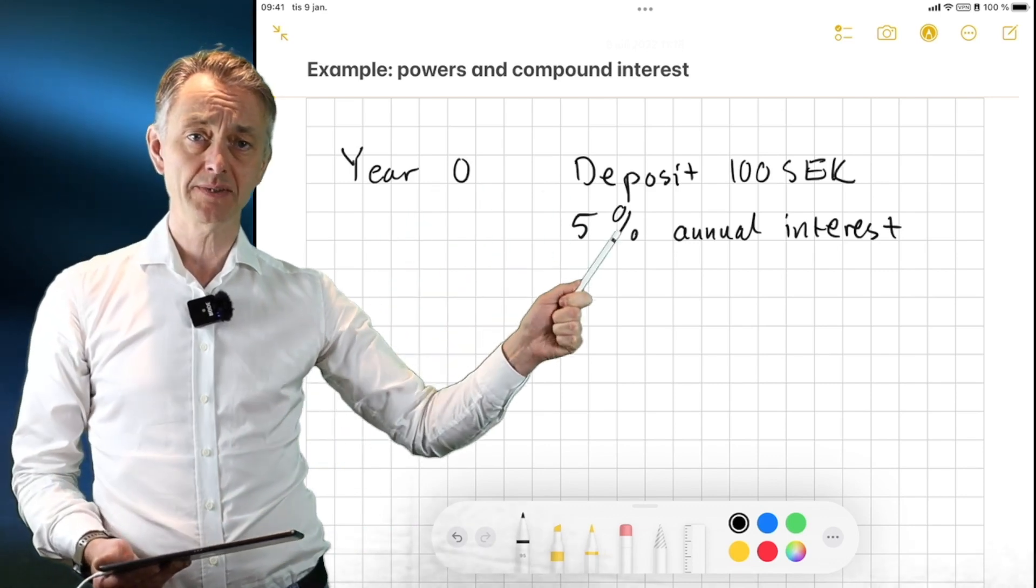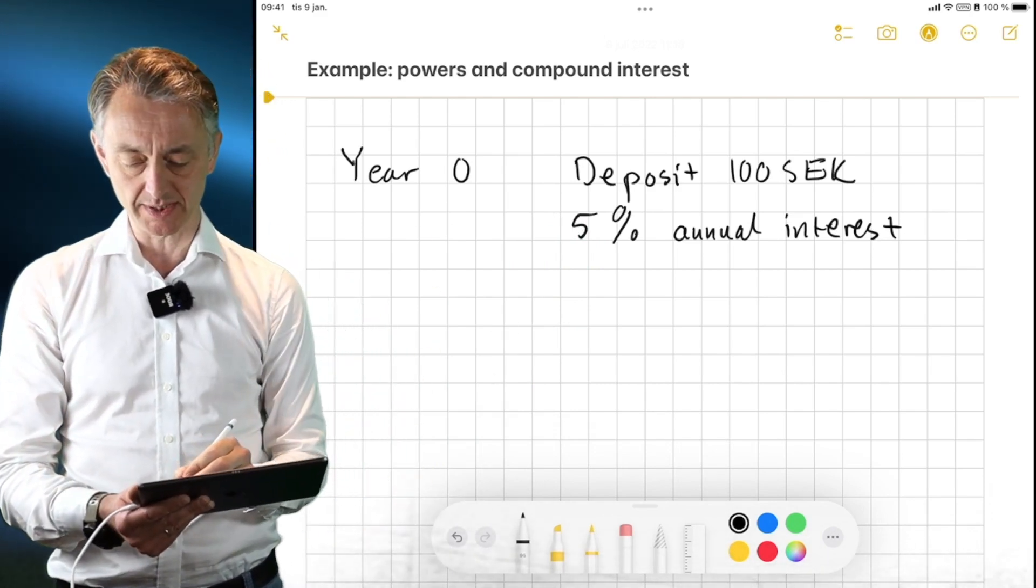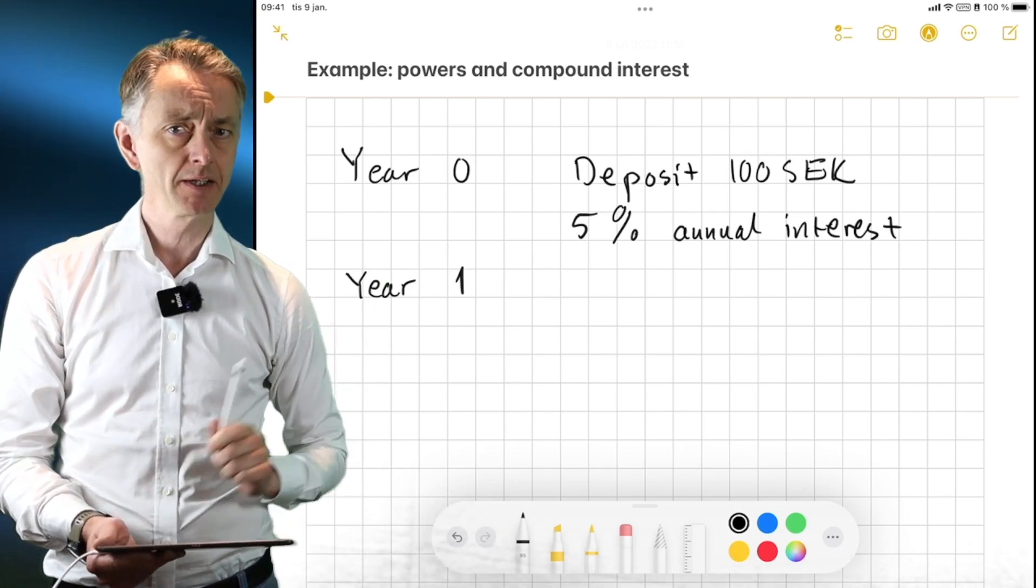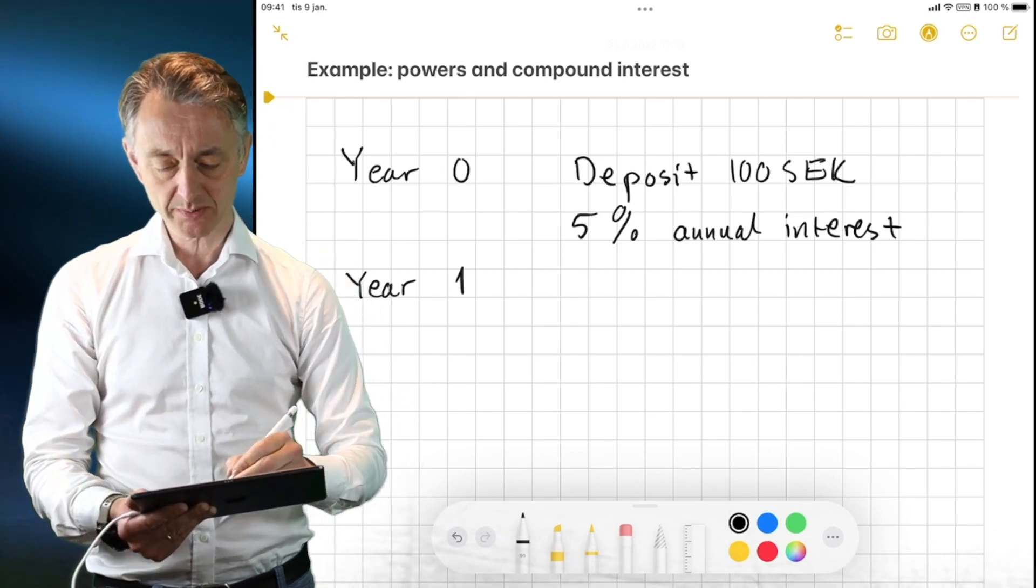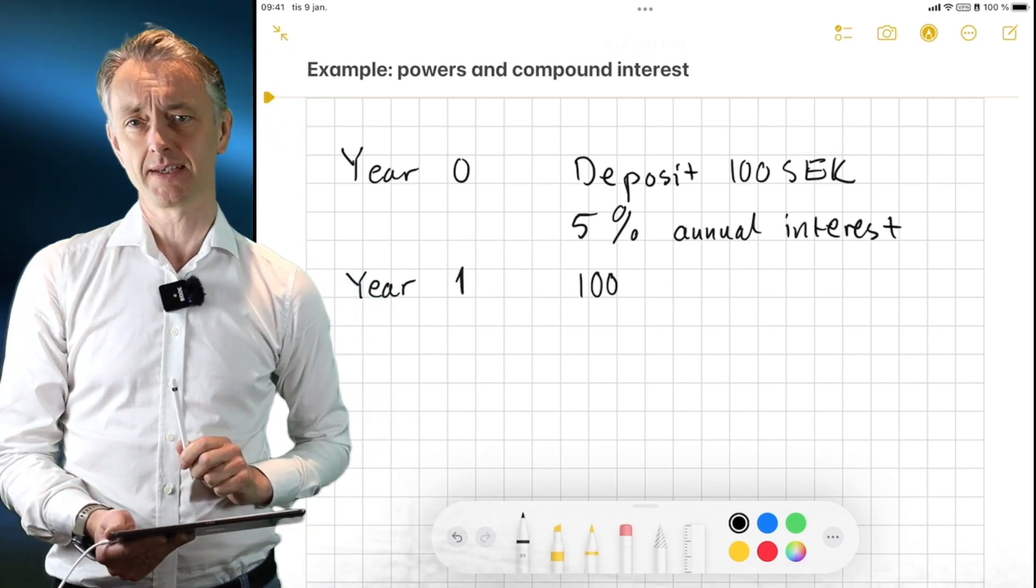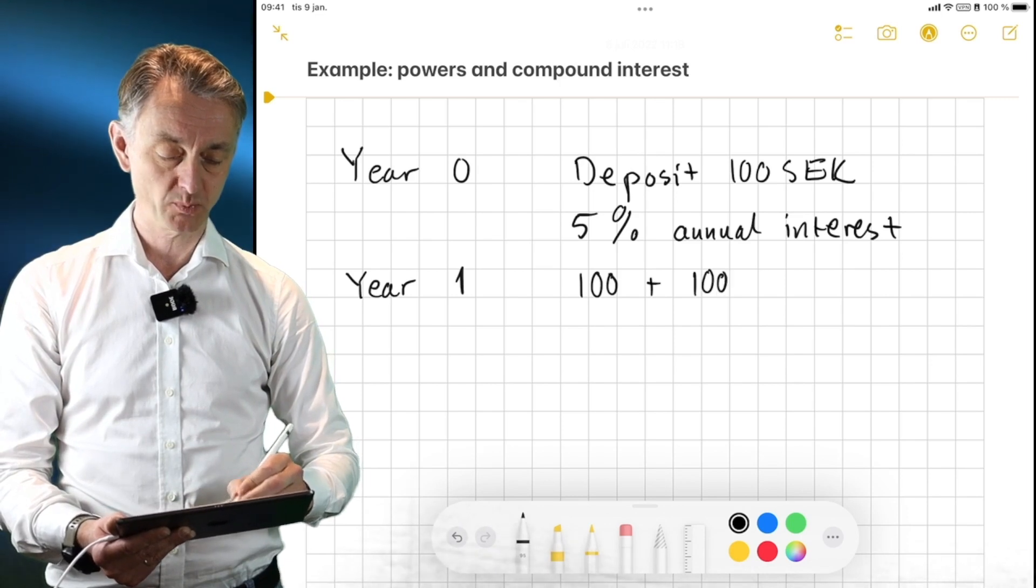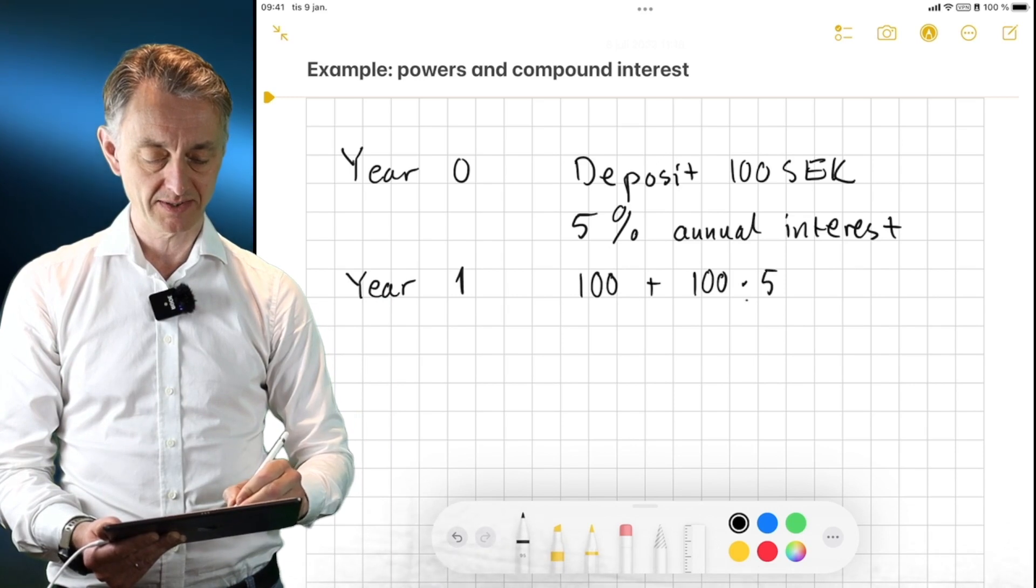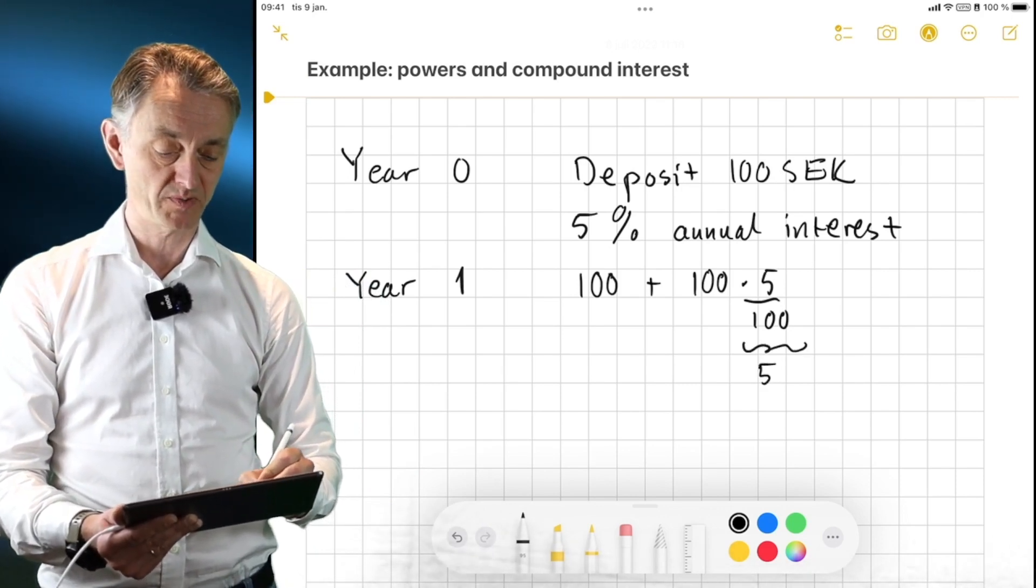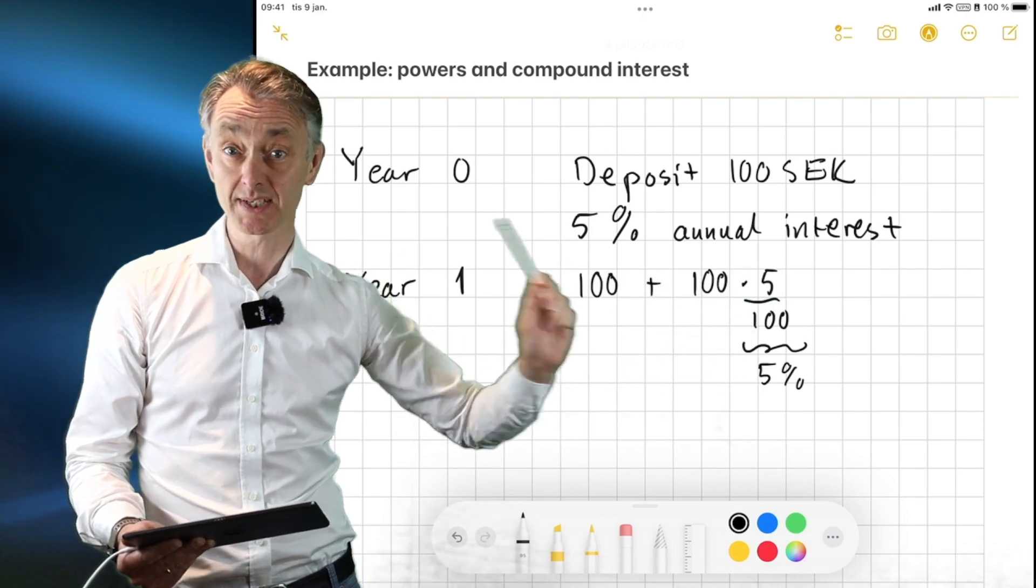So over a year I will get 5% in interest payments. So then I come back one year later. So now we are at year one. And how much money do I then have in my bank account? Well, providing no one has robbed the bank, I hope so, then I will still have my 100 kroner, right? Because that's what I deposited one year ago. And then I will have the interest payments from the bank into my account as well. So plus, and then I have my 100, which is then multiplied by 5%, times 5 divided by 100. So this corresponds to 5%, right? So 100 plus, and this is 0.05 times 100, that should be 5, right?